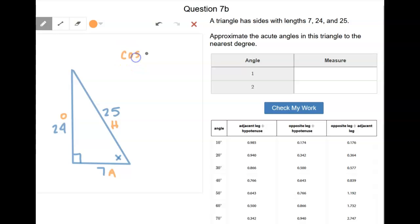So we'll do cosine of some angle is equal to 7 over 25, because cosine is adjacent over hypotenuse.